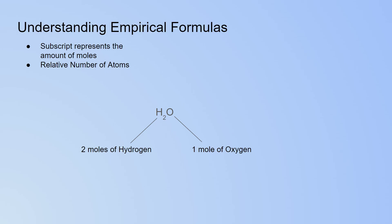The subscript represents the amount of moles. For example, in water, which is H2O, you have 2 moles of hydrogen for 1 mole of oxygen. This is also true for the relative number of atoms — 2 atoms of hydrogen for 1 atom of oxygen. Understanding that empirical formulas are based on moles allows you to use only moles to find empirical formulas.